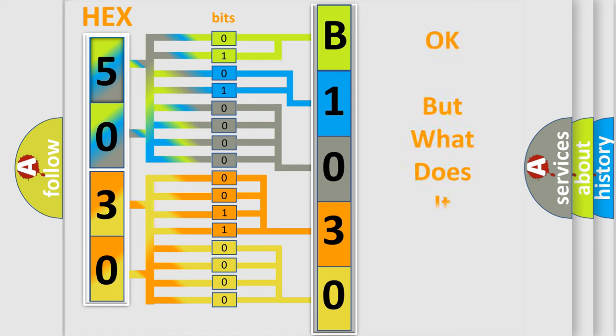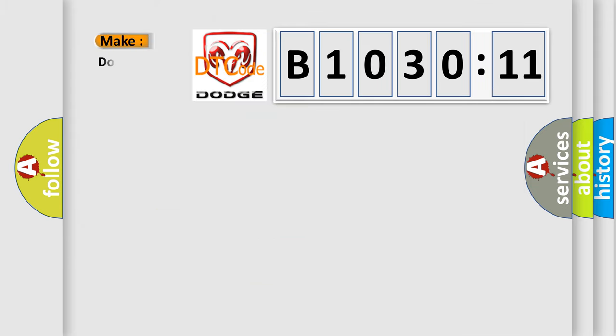The number itself does not make sense to us if we cannot assign information about what it actually expresses. So, what does the diagnostic trouble code B1030-11 interpret specifically for Dodge car manufacturers?